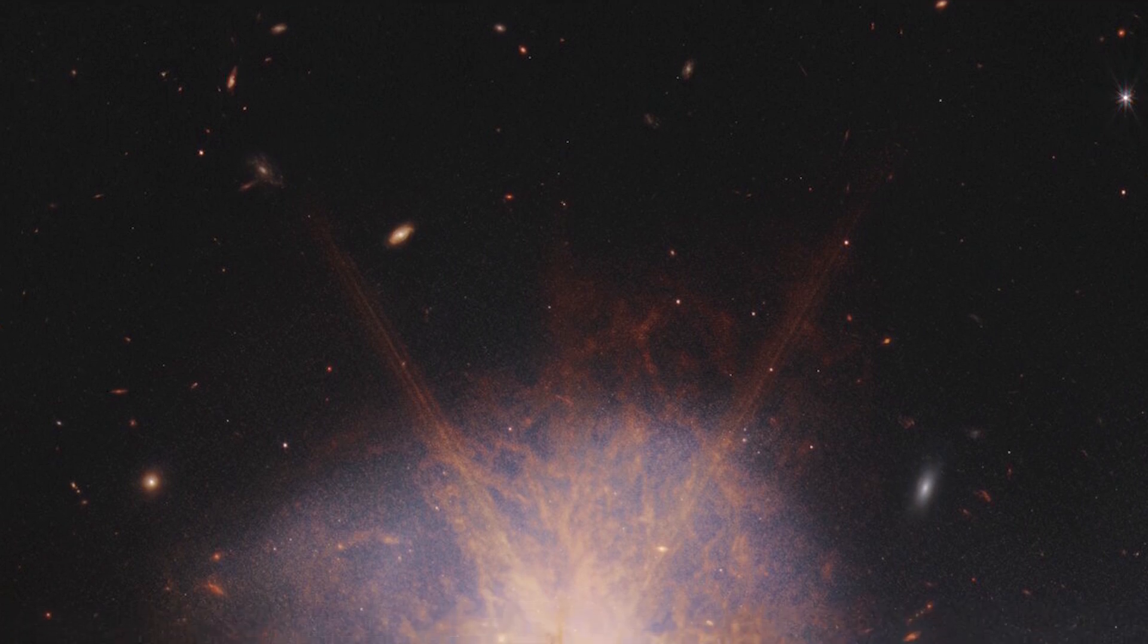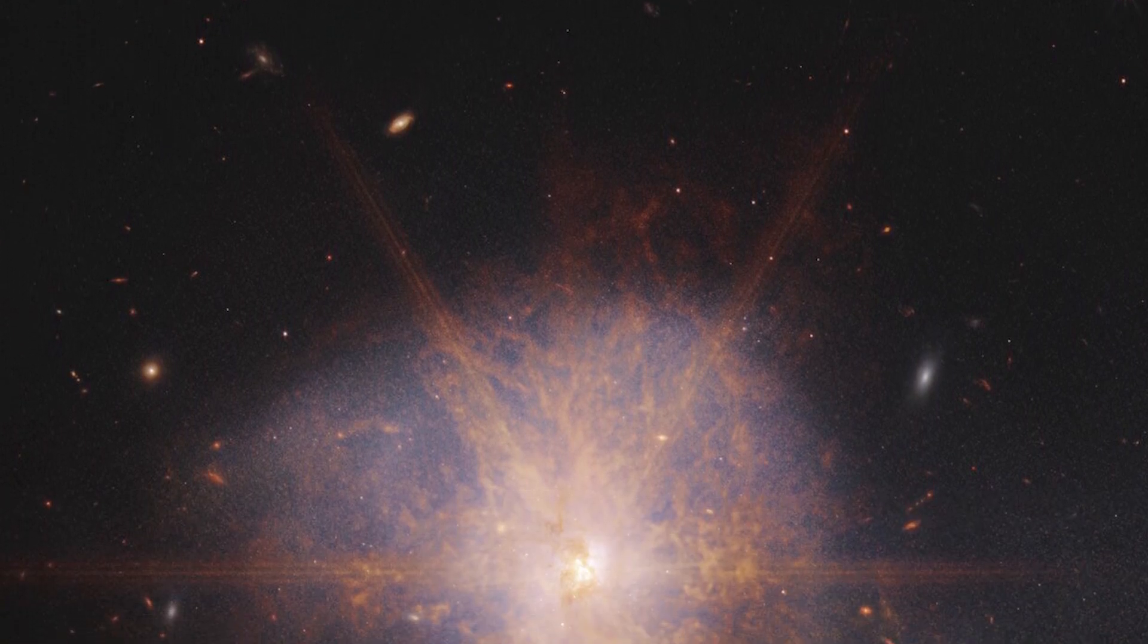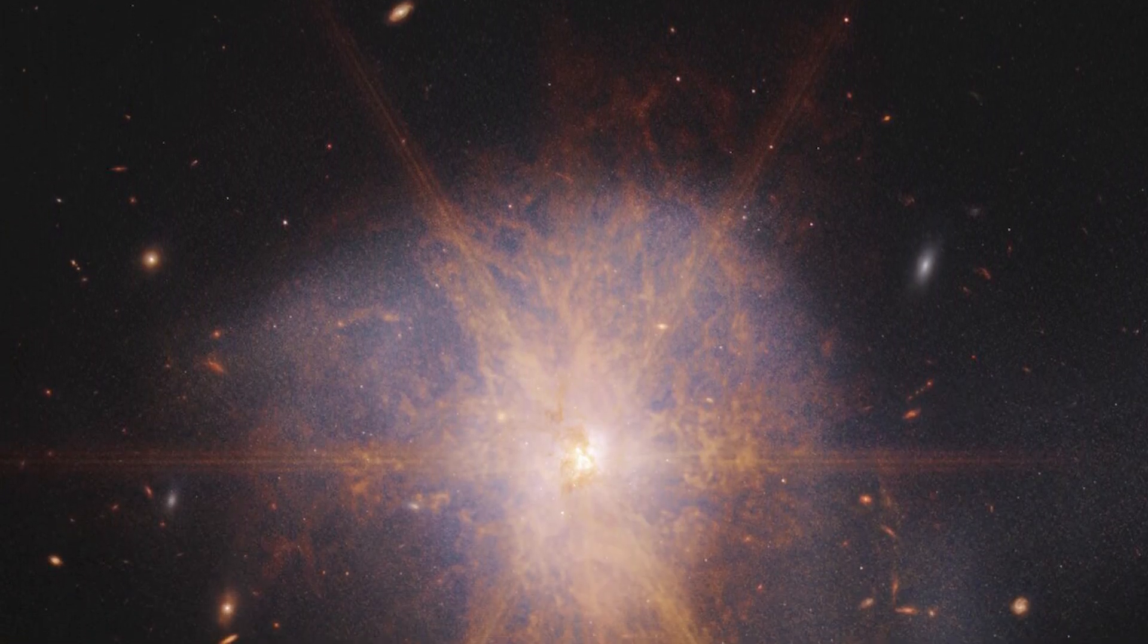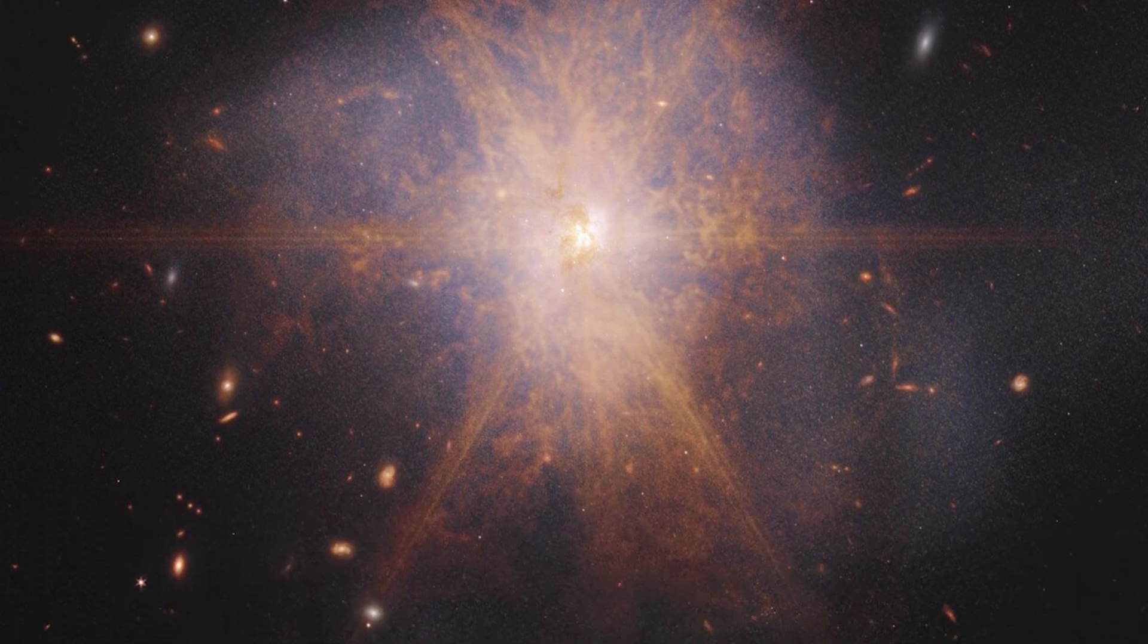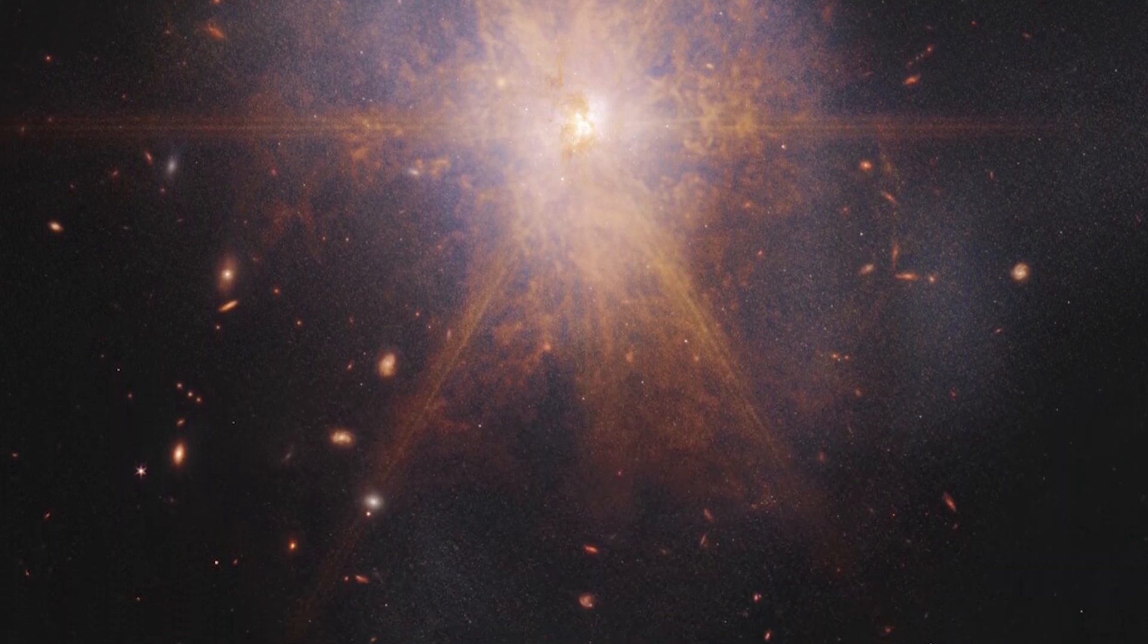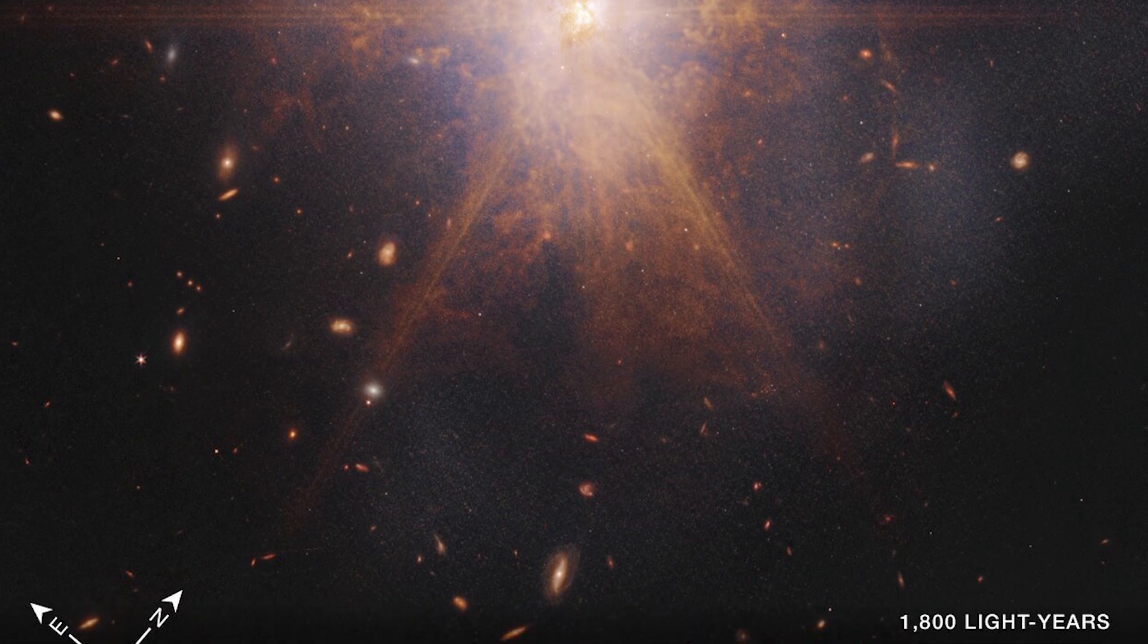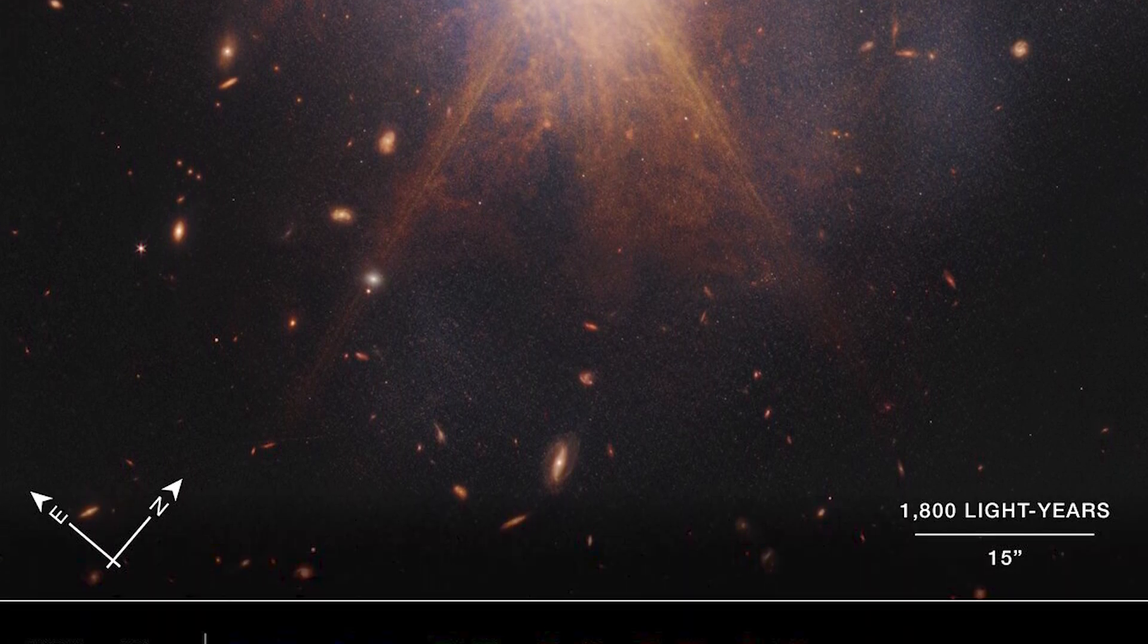This impressive galactic merger can be seen shining among other galaxies in the night sky. When two spiral galaxies merge, the phenomenon known as ARP 220 shines brightest in the infrared, making it perfect for observation by the James Webb Space Telescope.